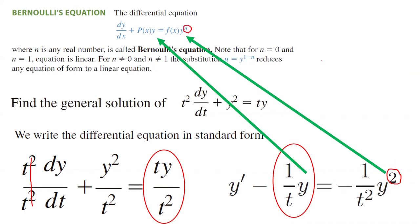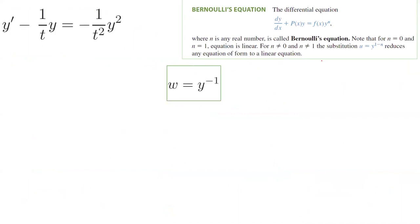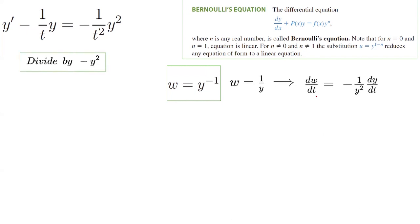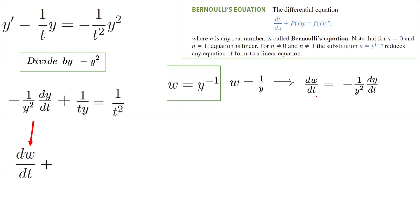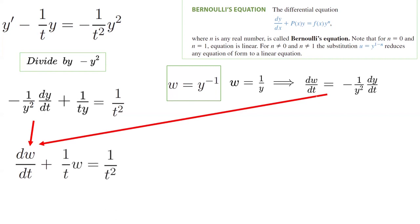So you can use a substitution: w equals y to the power (1 minus n), which is 1 minus 2 equals negative 1. Note that w equals 1 over y. Taking the differential dw/dt, it equals negative 1 over y squared times dy/dt. Now divide everything by negative y squared: it becomes negative (1/y²)(dy/dt) plus (1/t)(1/y) equals 1/t². Since negative (1/y²)(dy/dt) is dw/dt and 1/y is w, the equation becomes dw/dt plus (1/t)w equals 1/t².